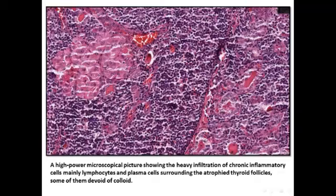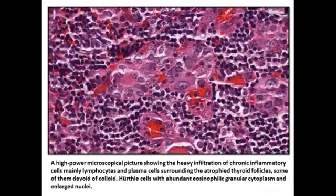Normal thyroid follicles small in size، atrophied، devoid of colloid، وthe heavy infiltration of the chronic inflammatory cells which are mainly lymphocytes. On higher power هو الـ joker والـ fake slide اللي هي الـ Hürthle cell - metaplastic، وعندها increase in N/C ratio وeosinophilic granular cytoplasm وprominent nucleus.